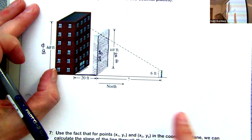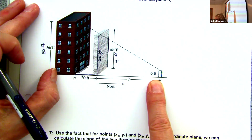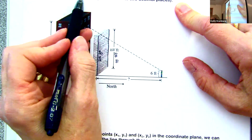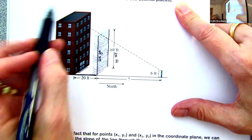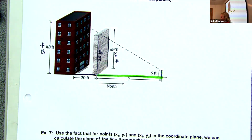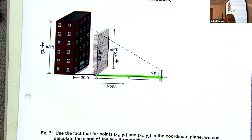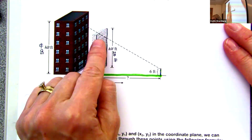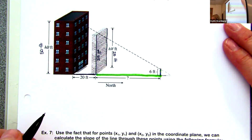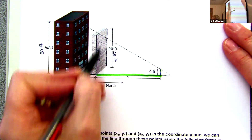A man who is 6 feet tall wishes to view the top of the building from the north side of the wall. How far north of the wall must he stand to see the top? They did not give me slope, so the first thing I need is a right triangle with a rise and run to calculate the slope. If I come down from the building and over, that run is 20 feet.